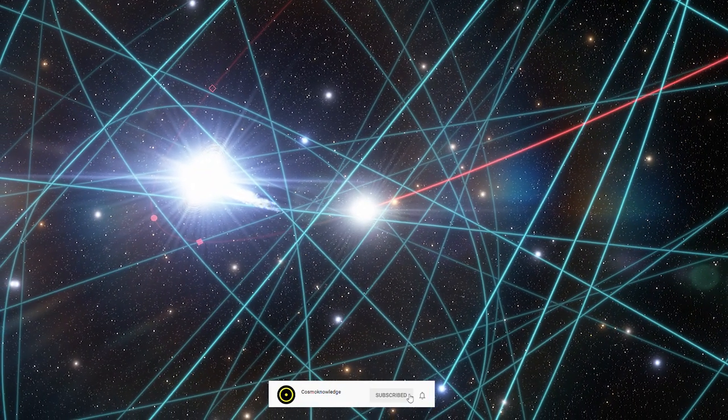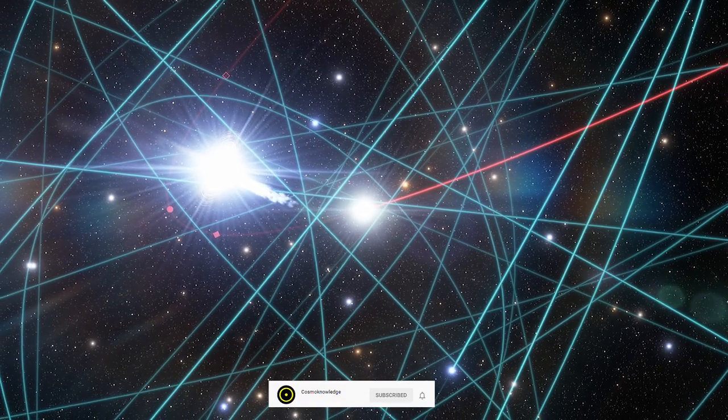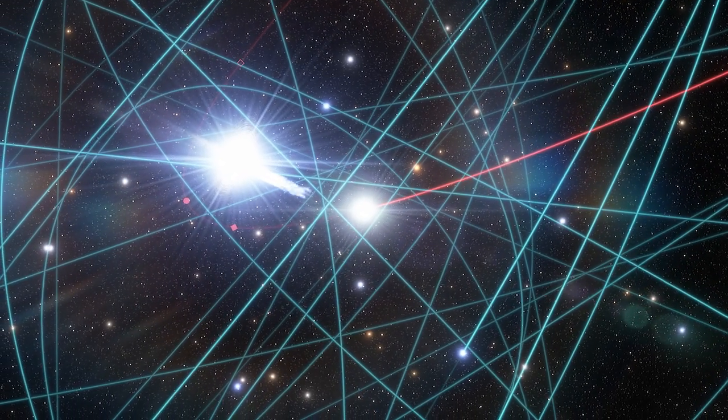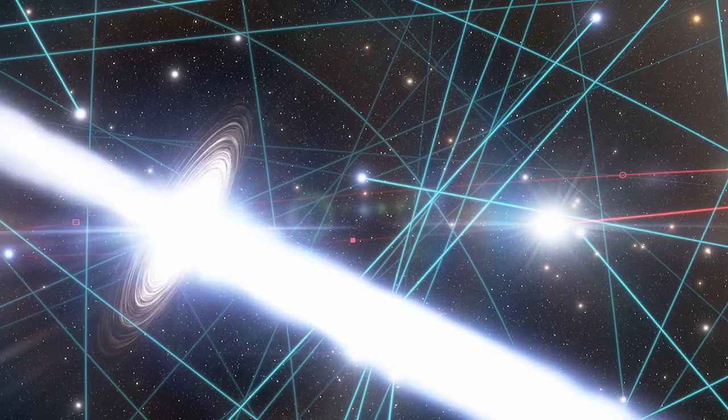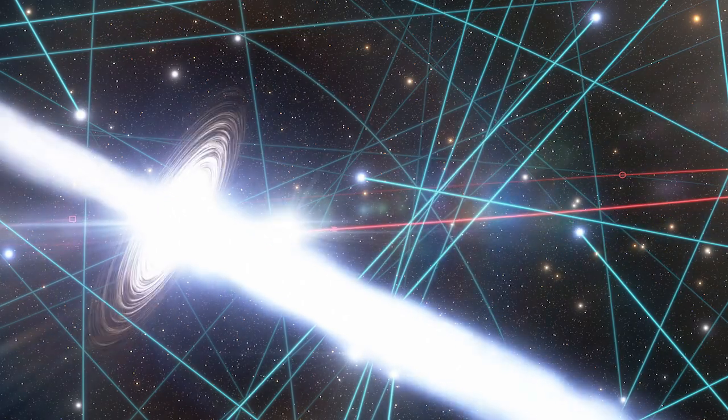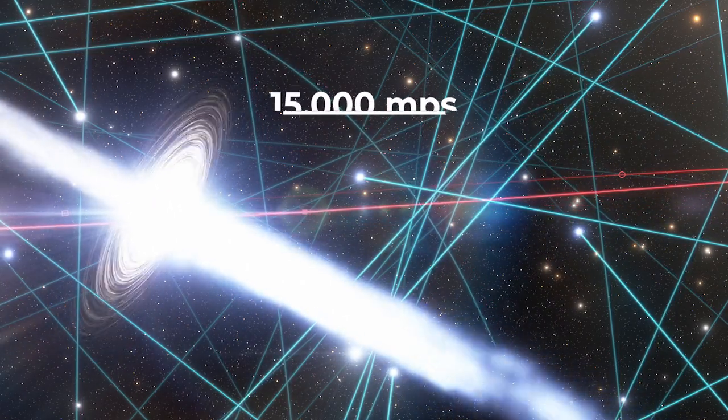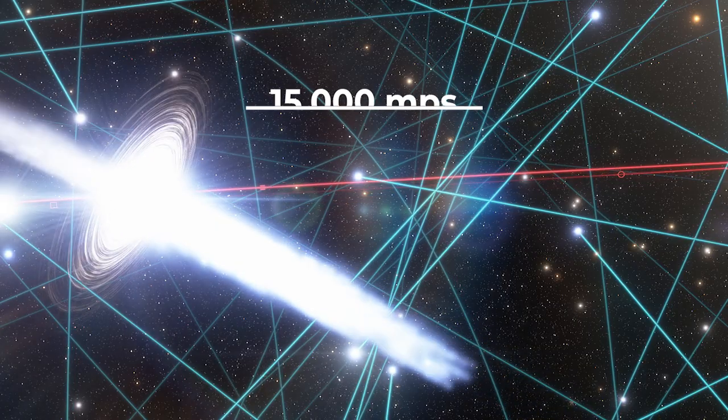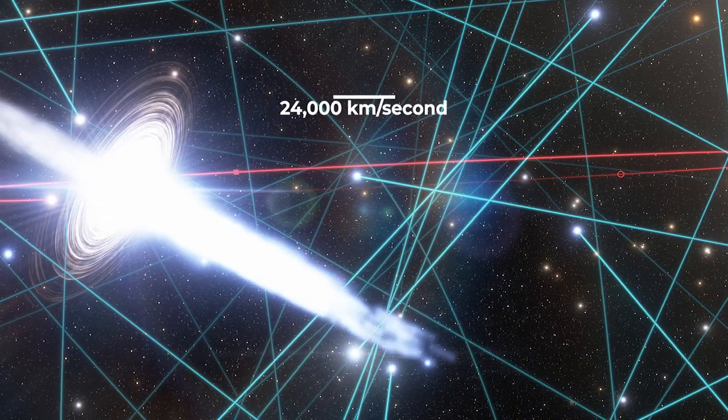The fastest known star orbits close to the supermassive black hole at the center of the Milky Way. It's moving at more than 8% of light speed, or 15,000 miles per second. That's faster than any other known star.